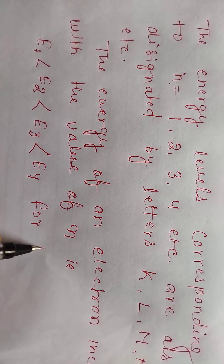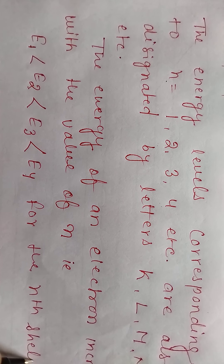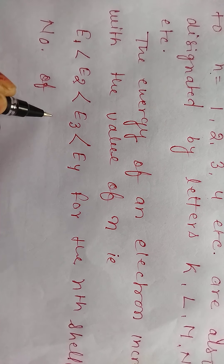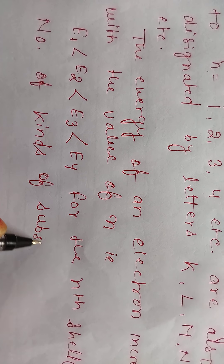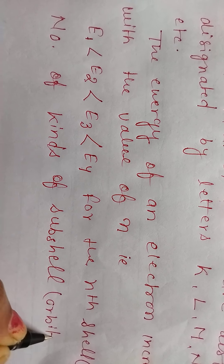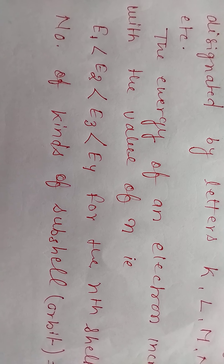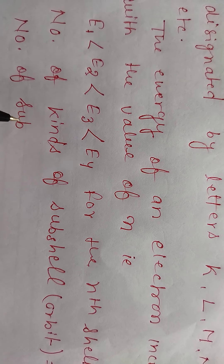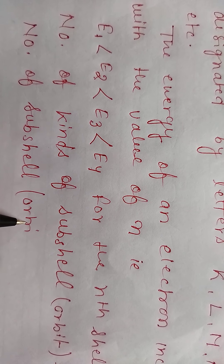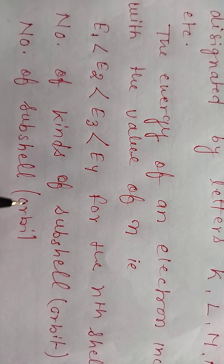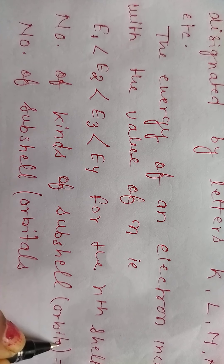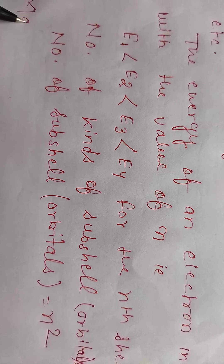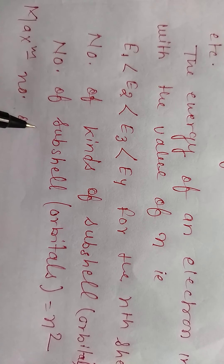For the nth shell, the number of kinds of subshells is equal to n, and the number of subshell orbitals is equal to n squared.